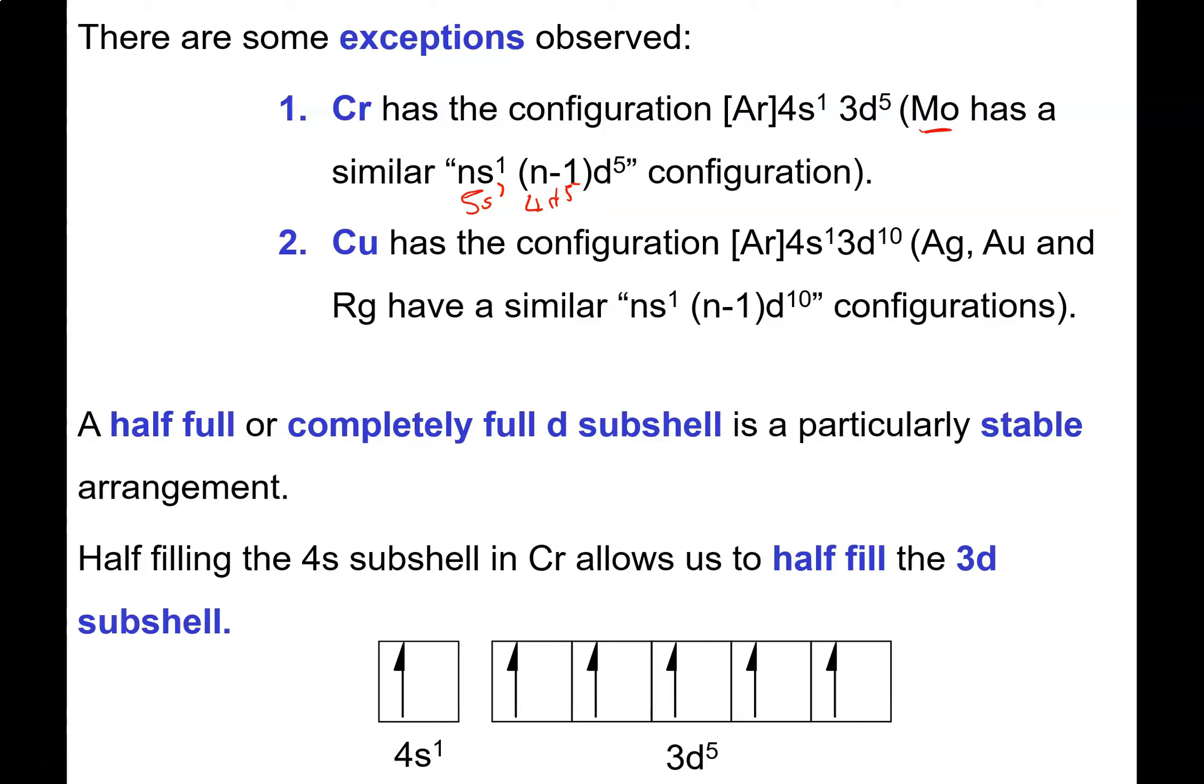Copper has the configuration Argon 4S1 3D10 instead of 4S2 3D9. The elements that are underneath copper also follow that pattern where they are NS1 N-1 D10 rather than the expected S2 D9. We have to keep in mind these exceptions. For the copper group, it's the whole column. For the chromium group, it's just molybdenum underneath it that does this weird thing.